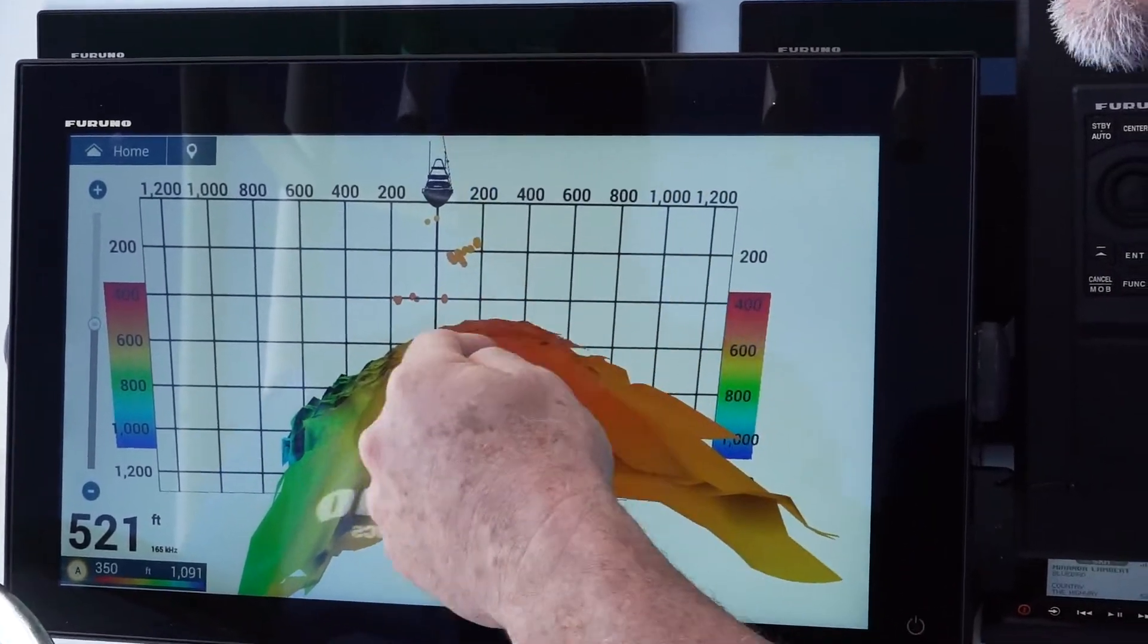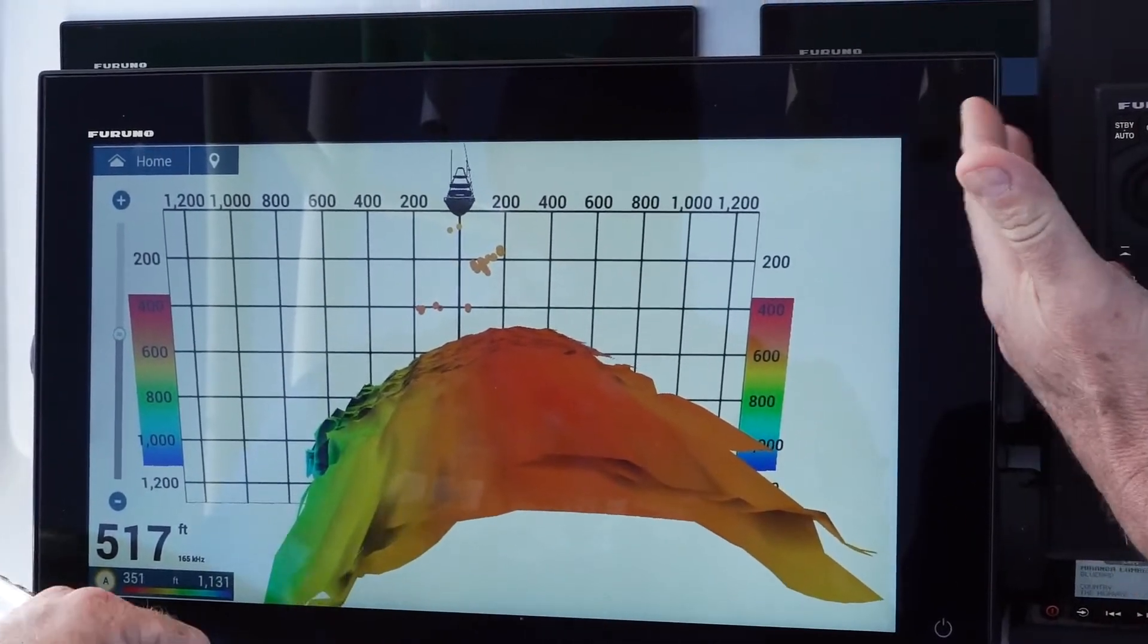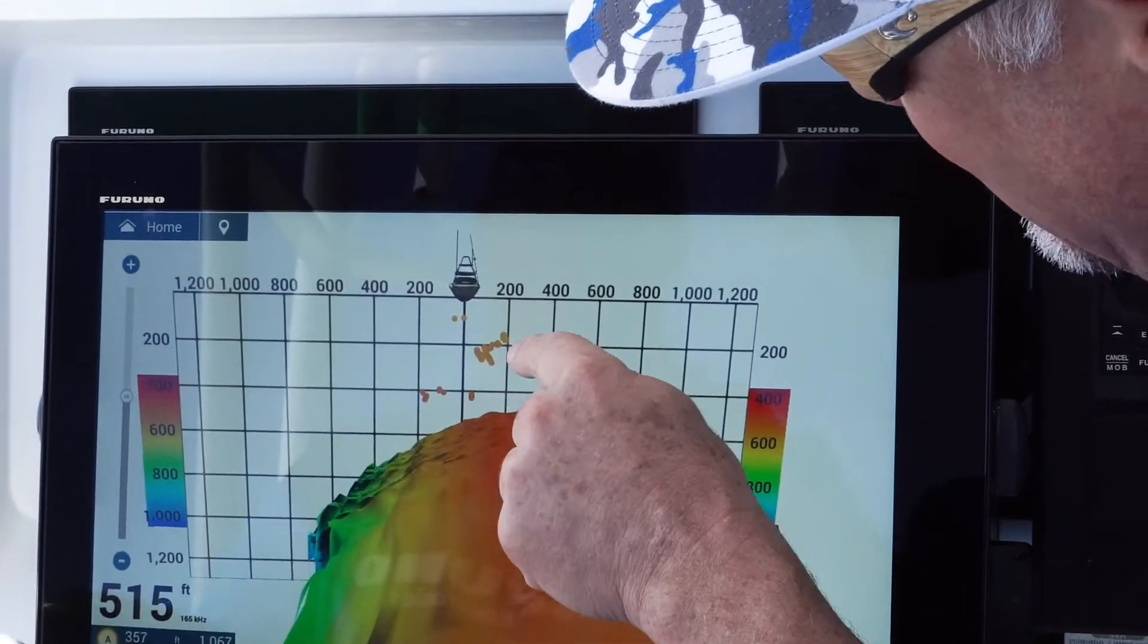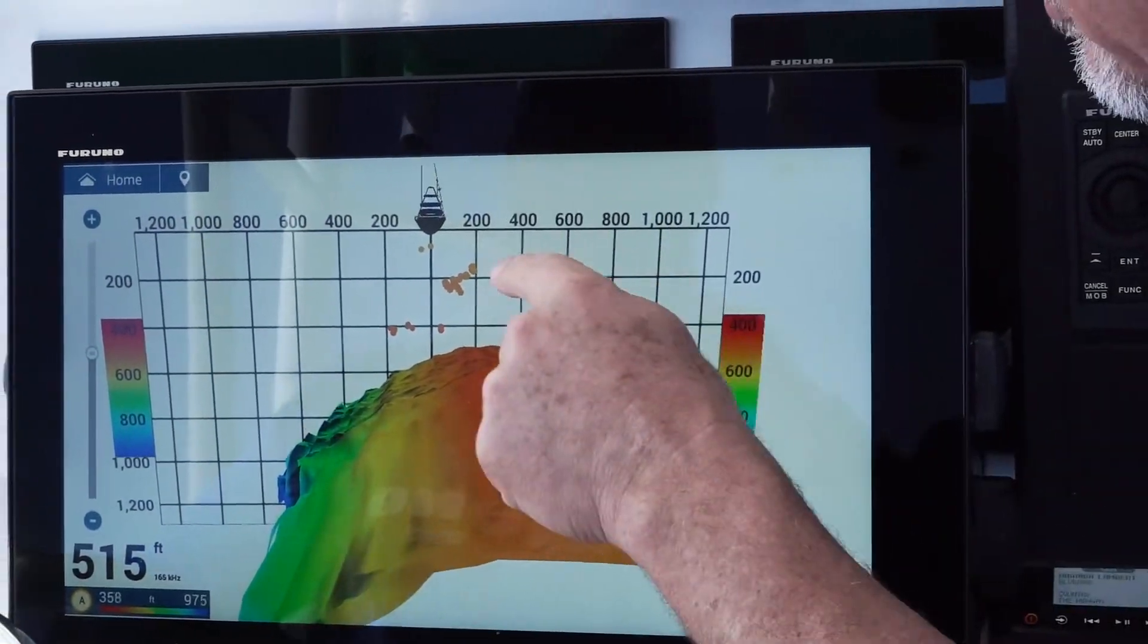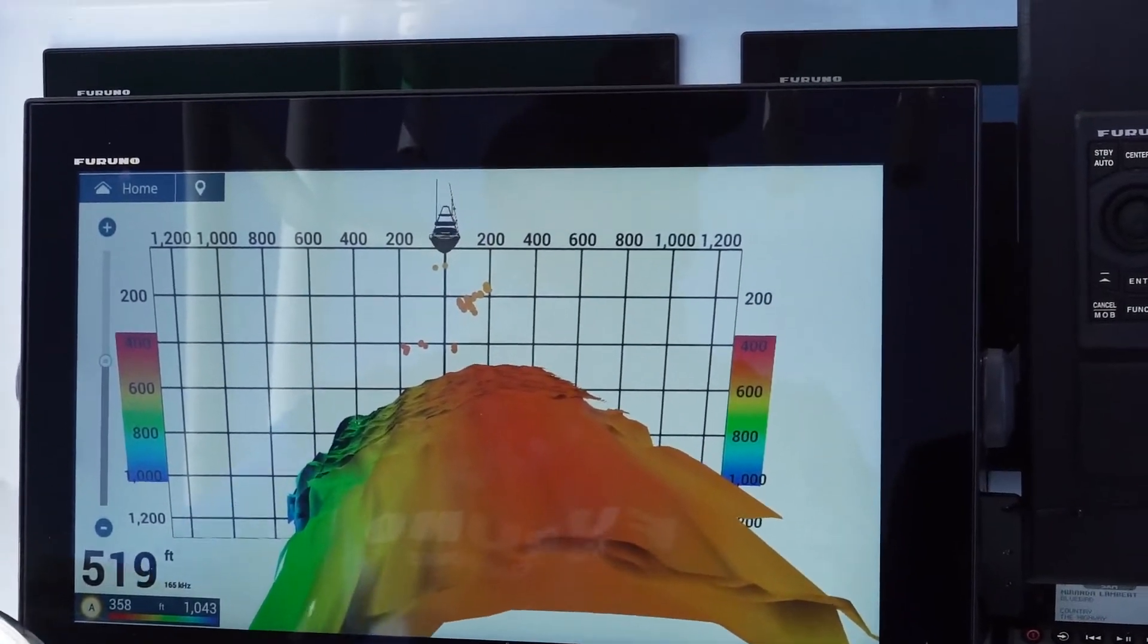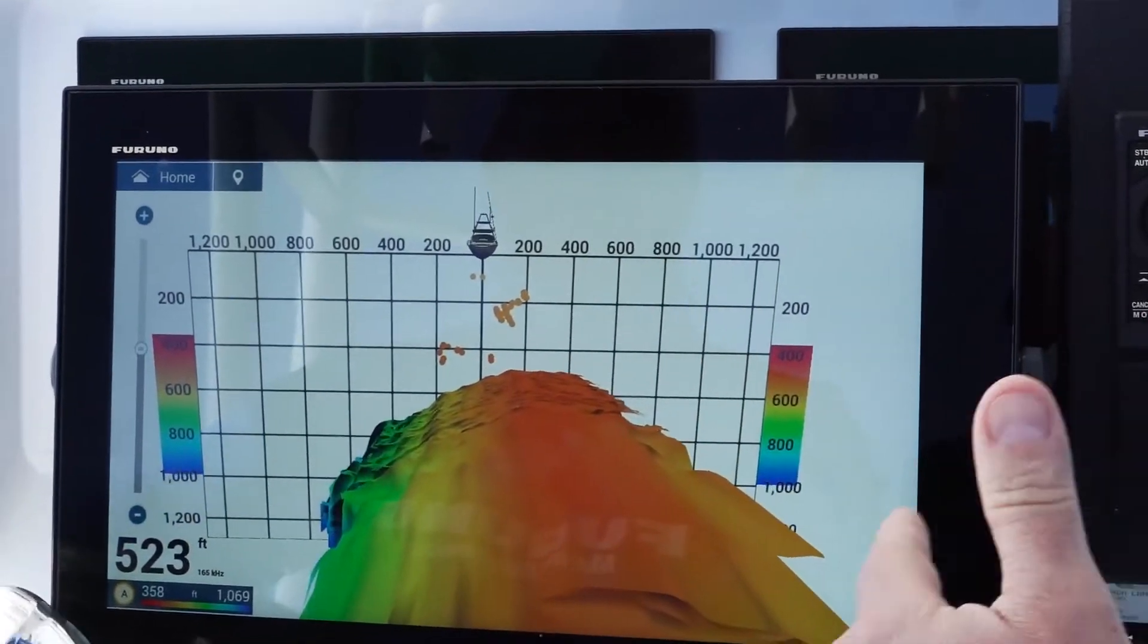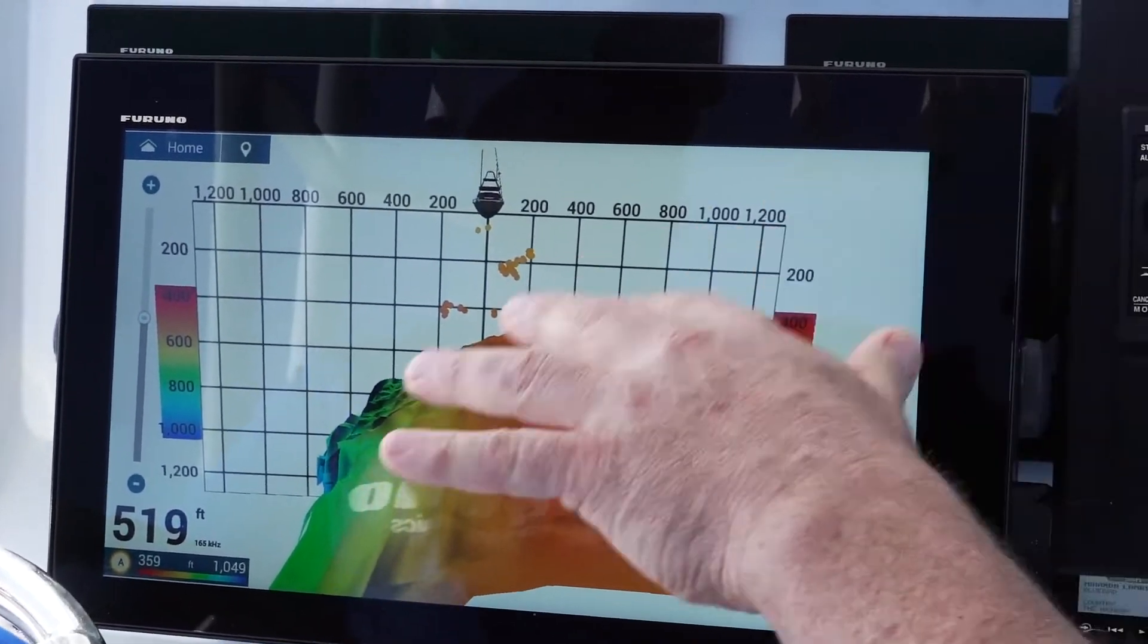That's one of the great things about the DFF3D: not only are you seeing the fish, but you're seeing how far off to the side of the boat you are using that wide 120-degree beam. Right now we can see a whole school of fish, probably tuna, about 200 feet down and about 100 to 200 feet off to the starboard side. You can look down and get that grid to really target the fish you're looking for.